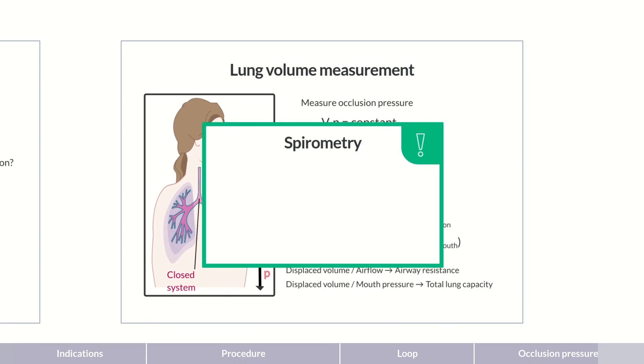At the end of body plethysmography, spirometry usually follows, which can be performed using the same measuring instrument. The patient is requested to maximally exhale and then maximally inhale, followed by forced exhalation.